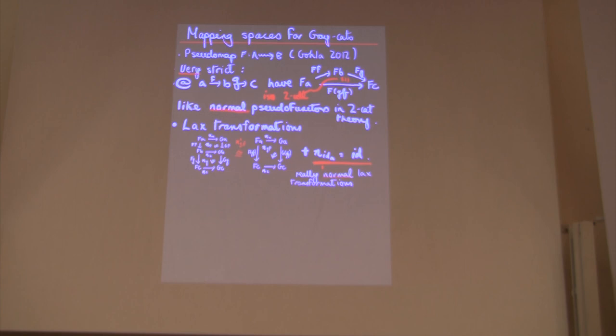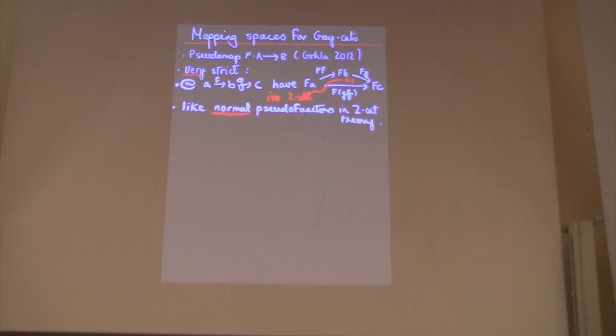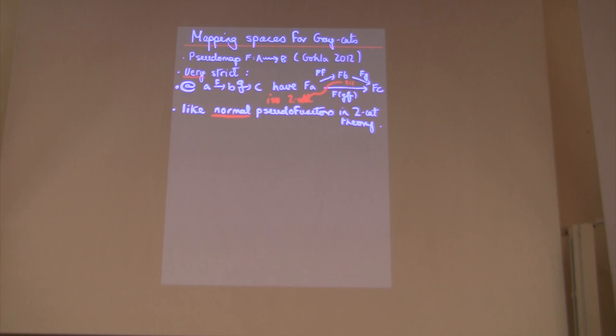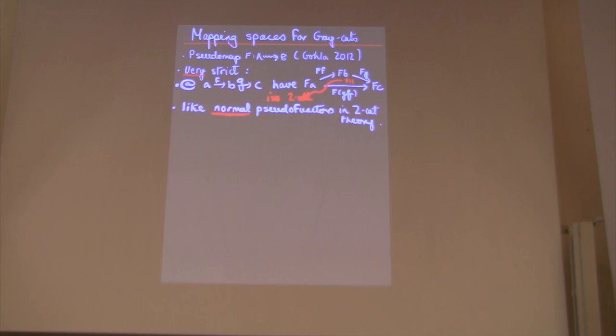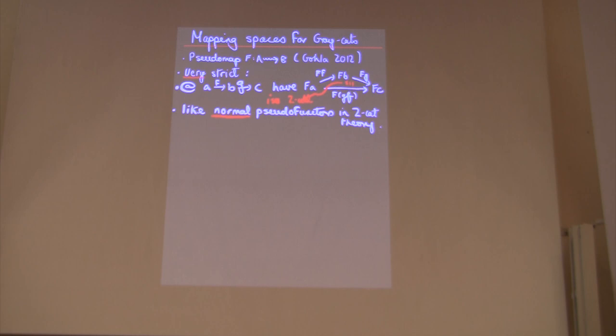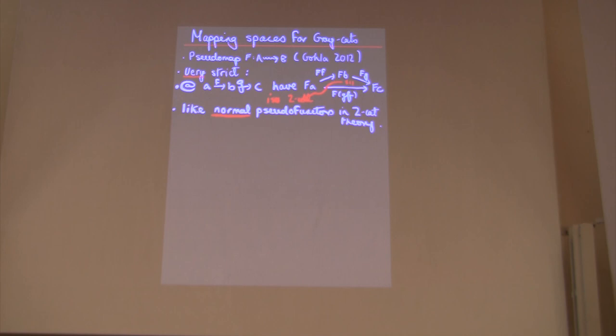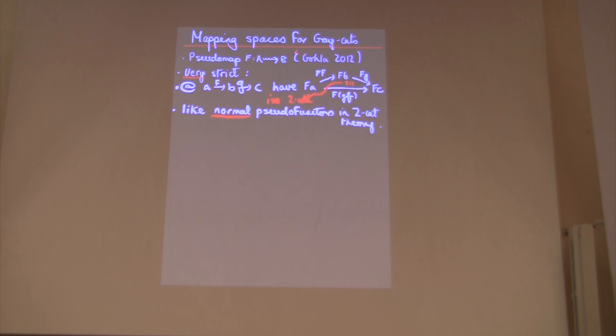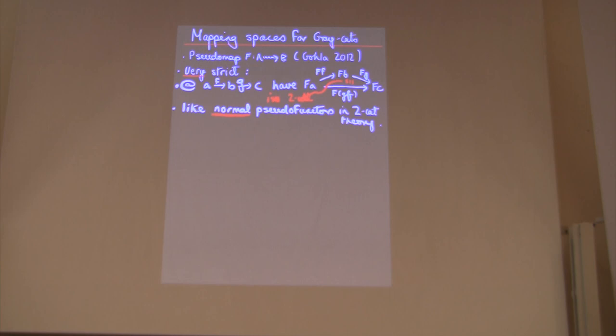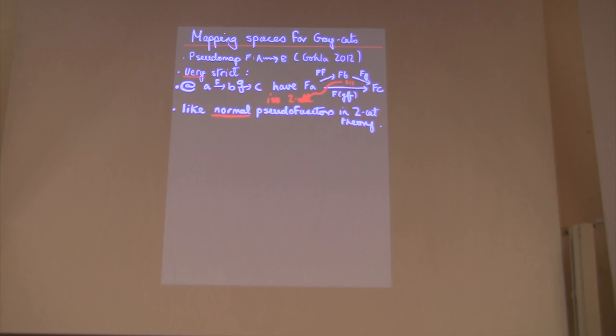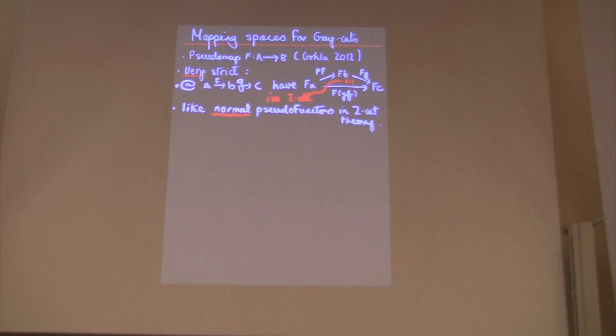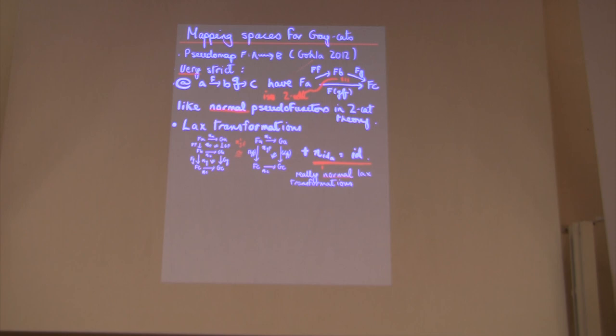So let me get onto now what in our situation, the correct, in our opinion, mapping space for Gray categories is. A variant of it was introduced by Gawe in 2012. First of all, what are the pseudo-maps? Well, these are extremely strict. They're basically just like normal pseudo-functors in two-category theory. That really means that they preserve identity strictly. And you have an isomorphism in a two-cell between this composite. So it's really, could be an equivalence or something, but it's really an invertible two-cell. So it's very strict. And they satisfy all the equations like in a normal pseudo-functor in two-category theory. So it's a very simple notion.